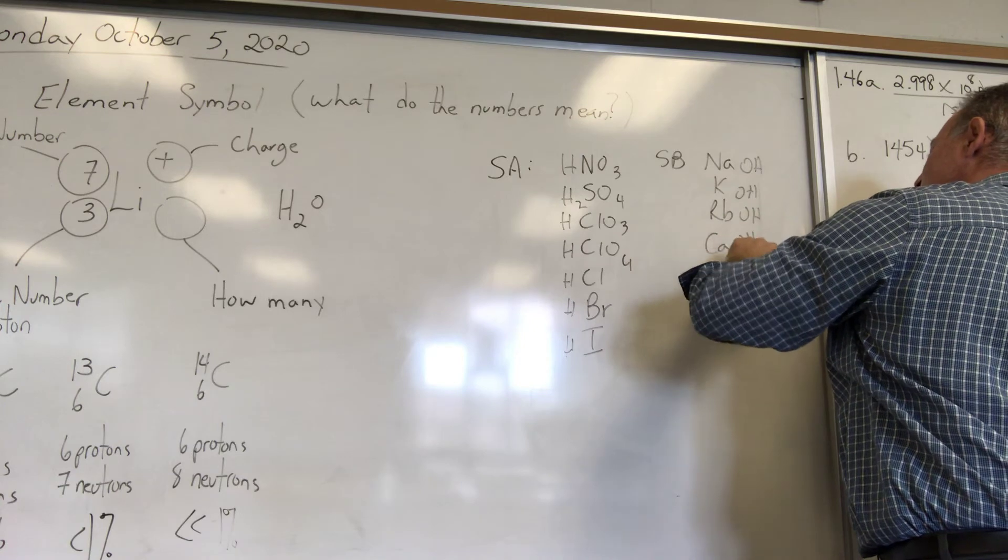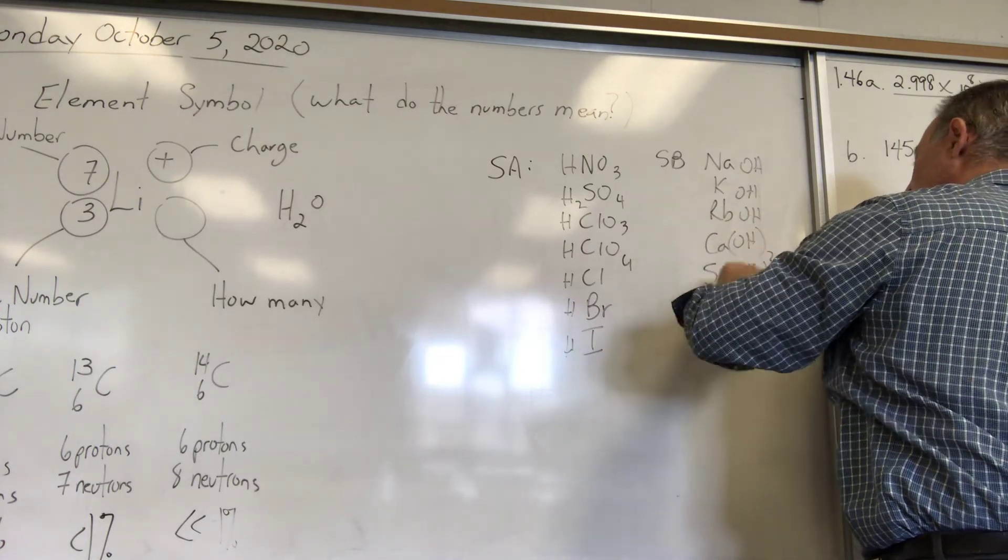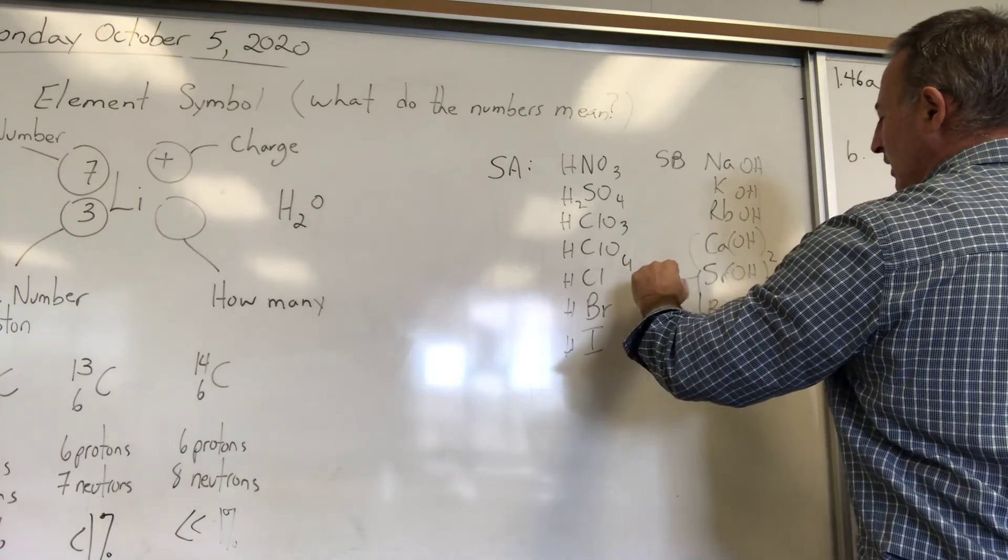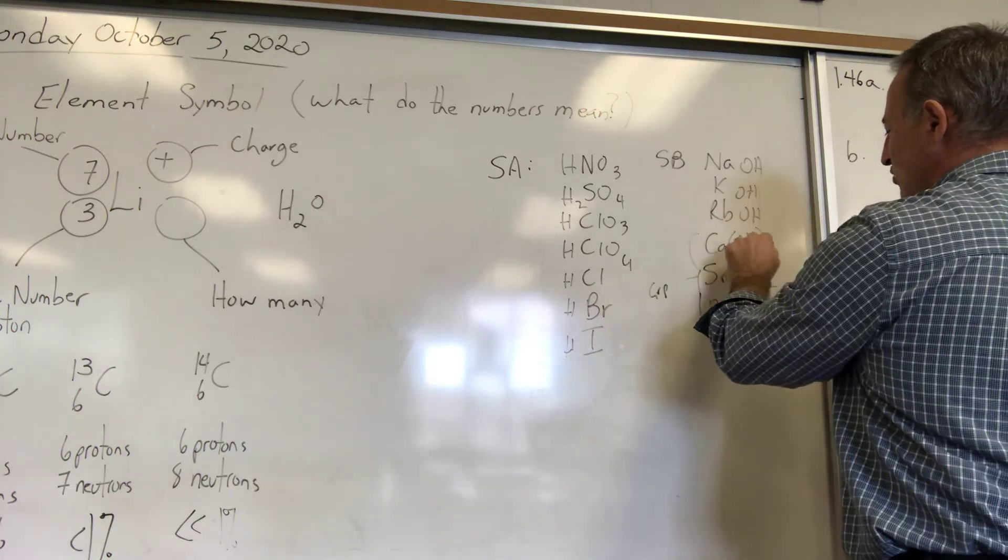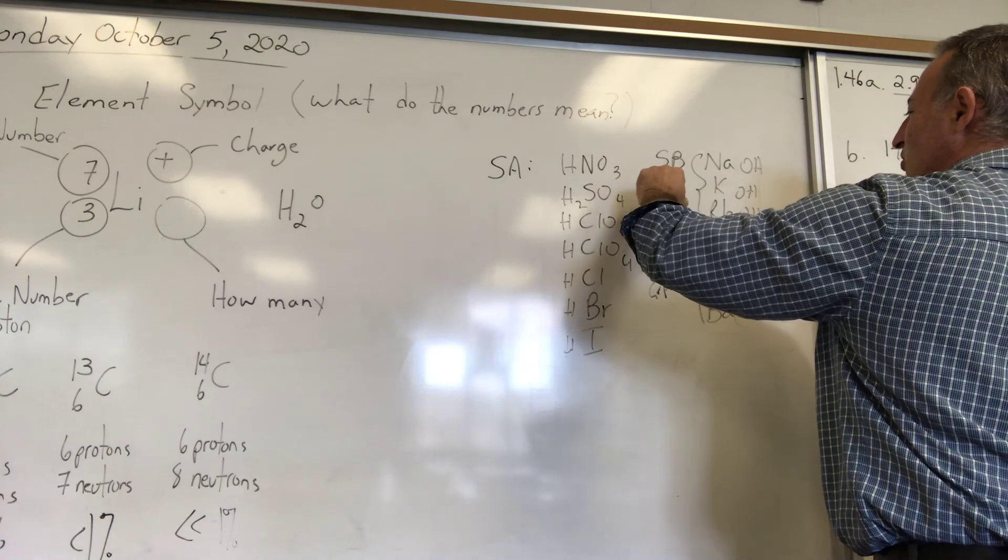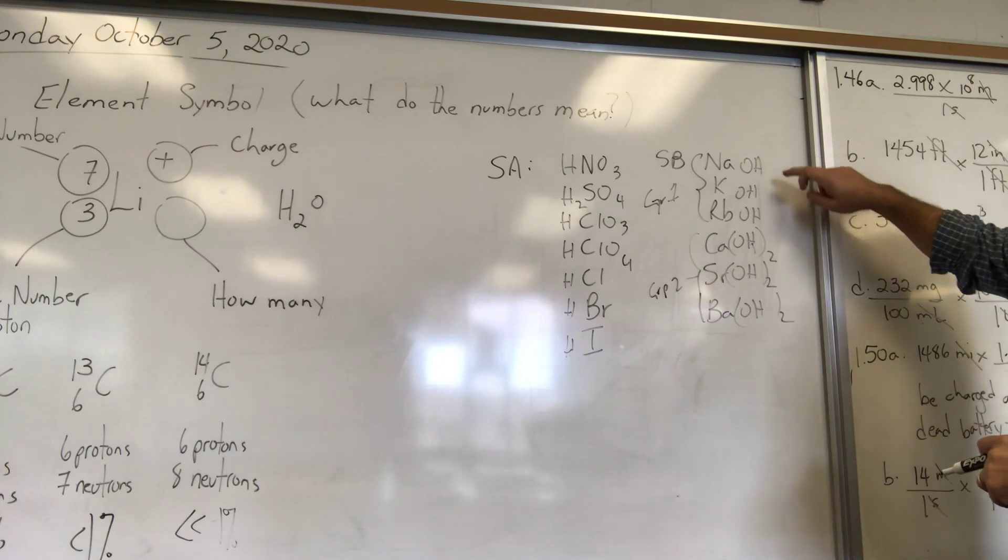Those are all the strong bases—there are no others. You put two actually, so these are group two alkaline earth elements. That's why they take two hydroxides, because hydroxide has a minus one charge. And these are group one alkali metals, so they have a plus one charge and they take only one hydroxide.